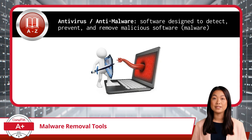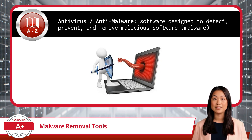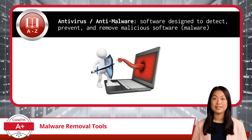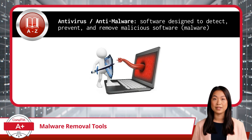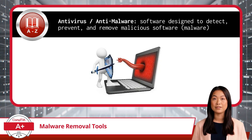But what if the antivirus doesn't catch everything? That's where anti-malware tools step in. While antivirus focuses on viruses, anti-malware tools cast a wider net, targeting threats like spyware, adware, and ransomware. If you're dealing with more advanced threats, such as ransomware that encrypts your files, anti-malware software can be your go-to solution. Both antivirus and anti-malware are software tools designed to detect, prevent, and remove malicious software.